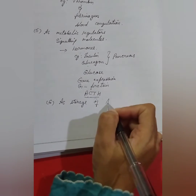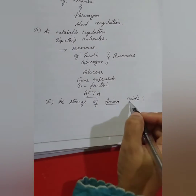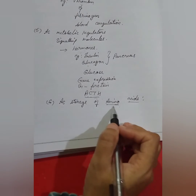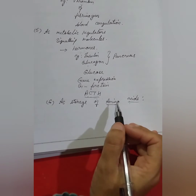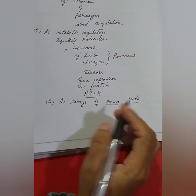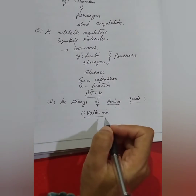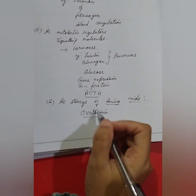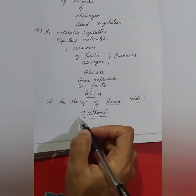The next function is storage of amino acids. Amino acids are the building blocks of proteins, and they can be obtained simply by breaking down proteins. For example, the protein ovalbumin acts as a storage of amino acids - these amino acids can be obtained by breaking down this protein.